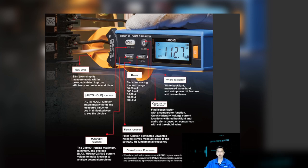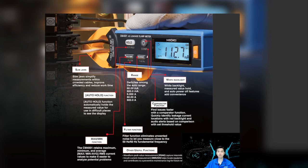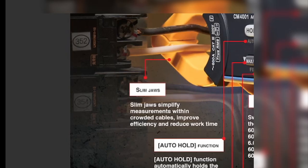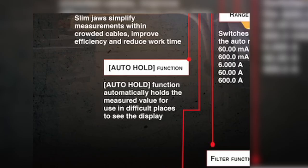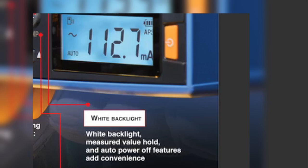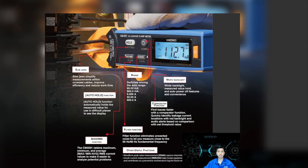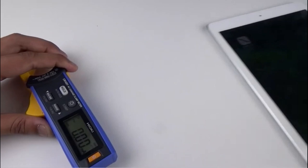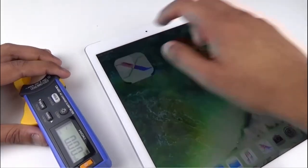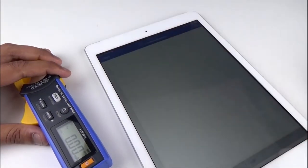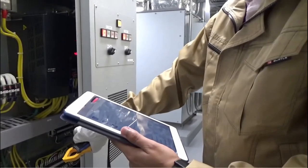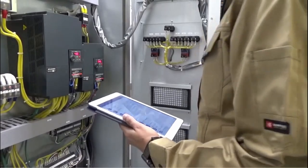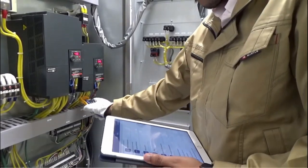Besides measuring leakage current, the CM4001 also has many wonderful features such as slim jaw, in-rush current measurement, auto-hold function, and bright white backlight. Last but not least, it is able to connect directly to Genny Cross, which is a freeware, on your mobile or tablet, if you purchase the ZEK3210 Bluetooth wireless dongle. This will allow you to monitor and log measurement parameters on your devices.